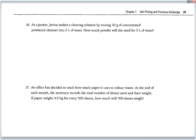Number 16, as a janitor, Janine makes a cleaning solution by mixing 30 grams of powdered cleanser into 2 liters of water. So that's a rate. 30 grams of cleaner for every 2 liters of water. And I don't need to put in the powder or the cleanser, or the powder or the water into my equation because I can tell the difference between, because I already have different units there, grams and liter. So it says, how much powder, that's going to be measured in grams. So x grams for 5 liters. Cross multiply here. 5 times 30 divided by 2, and it's 75 grams.